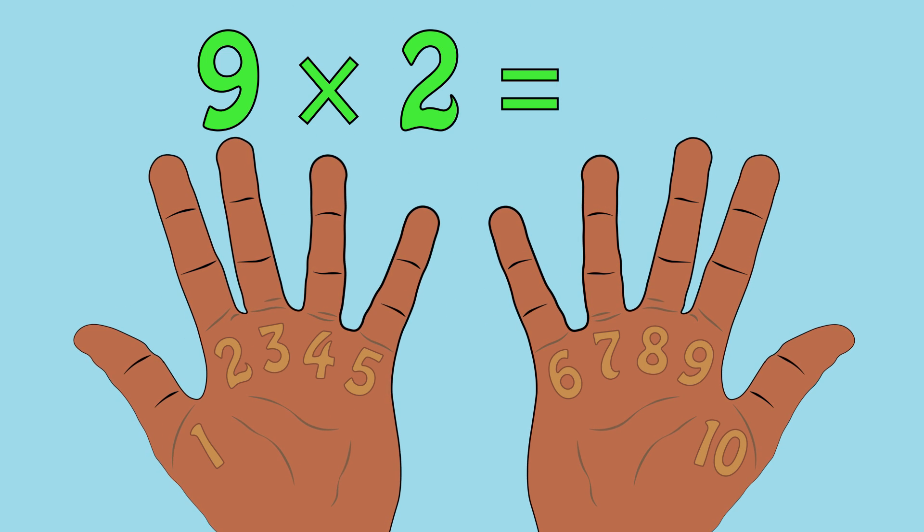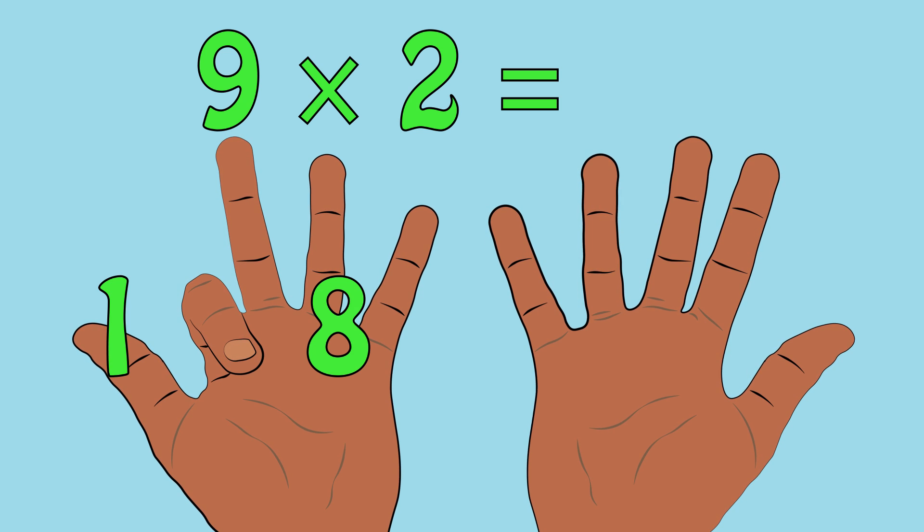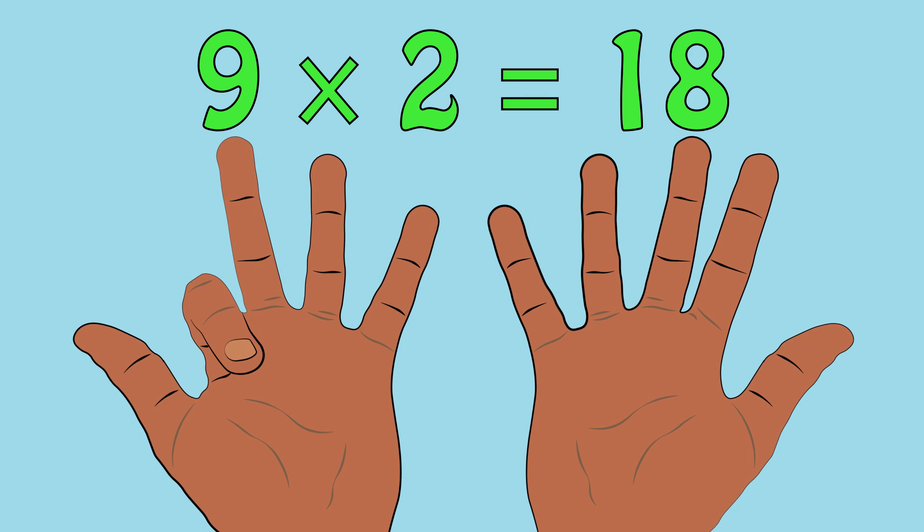For 9 times 2, we fold down the second finger, leaving 1 to the left and 8 to the right. 9 times 2 equals 18.